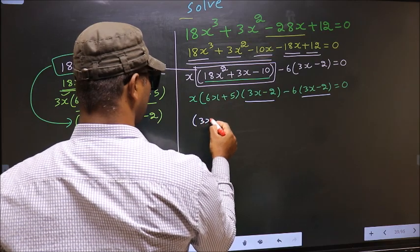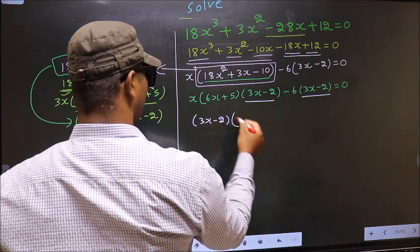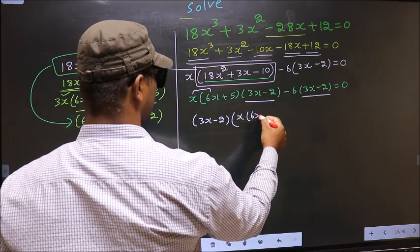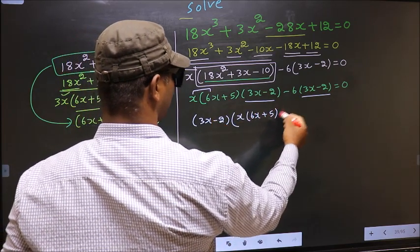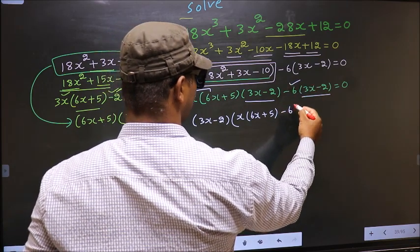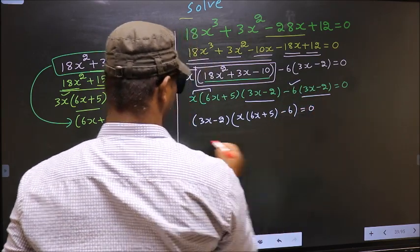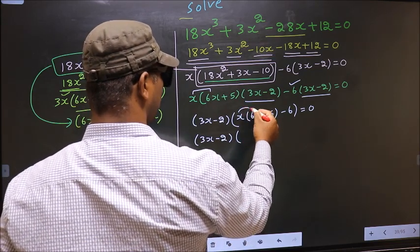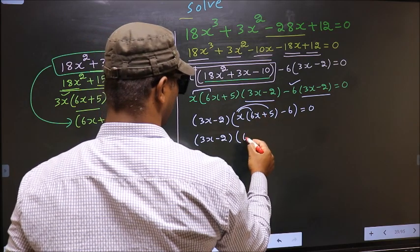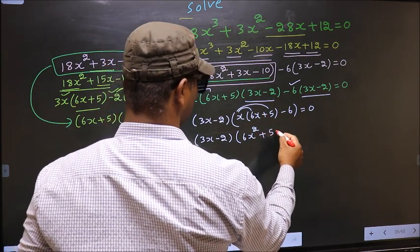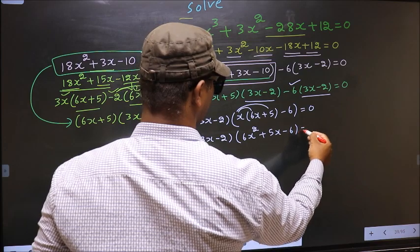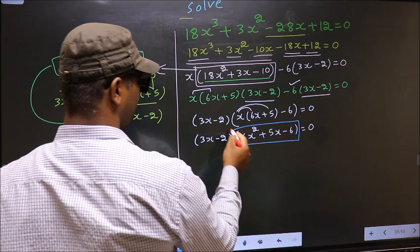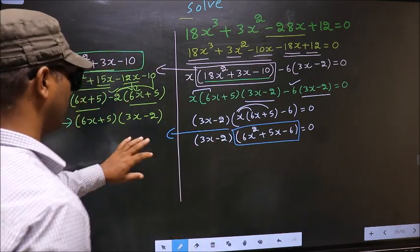So (3x - 2) outside; inside we are left with x(6x + 5) - 6 = 0. Now opening up the brackets gives 6x² + 5x - 6 = 0. We got a new quadratic, so I will factorize this quadratic.